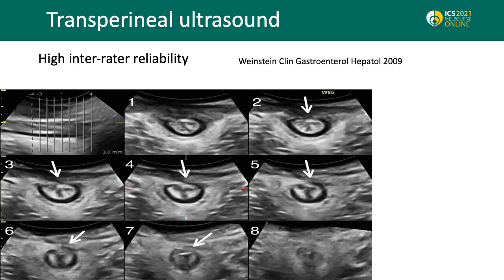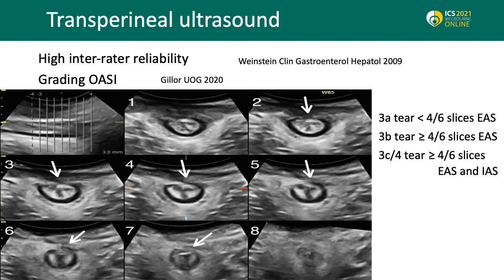Transperineal ultrasound has demonstrated high inter-rater reliability for diagnosis of external anal sphincter defects. Grading of OASI can be performed by the algorithm developed by Dietz et al., where a 3A tear is diagnosed on tomographic imaging if less than 4 out of 6 slices are abnormal at the external anal sphincter, and a 3C or 4 degree tear if both the external anal sphincter and the internal anal sphincter were abnormal in more than 4 out of 6 slices.